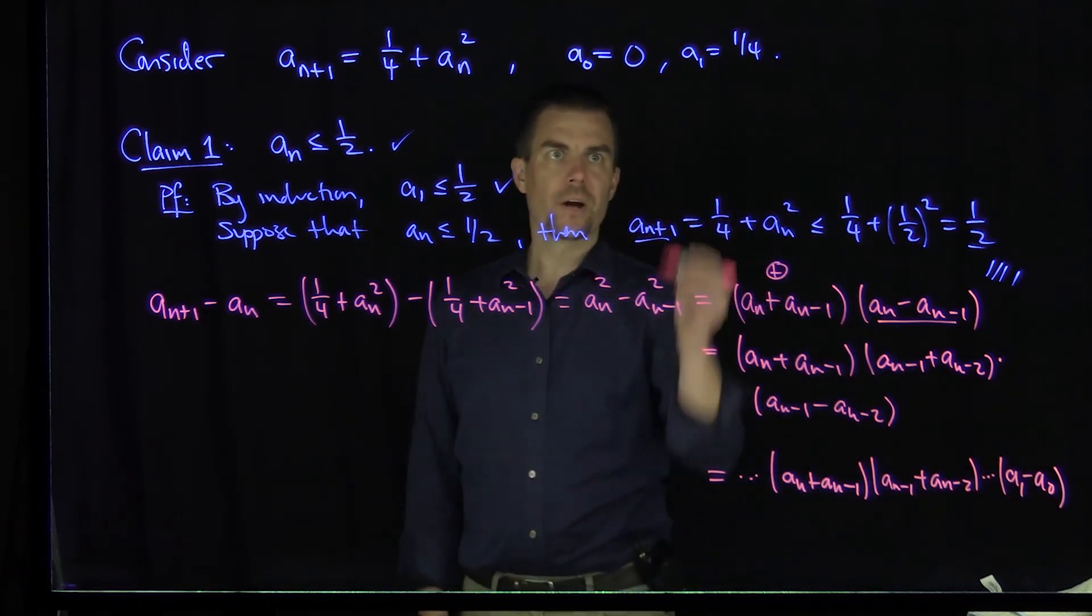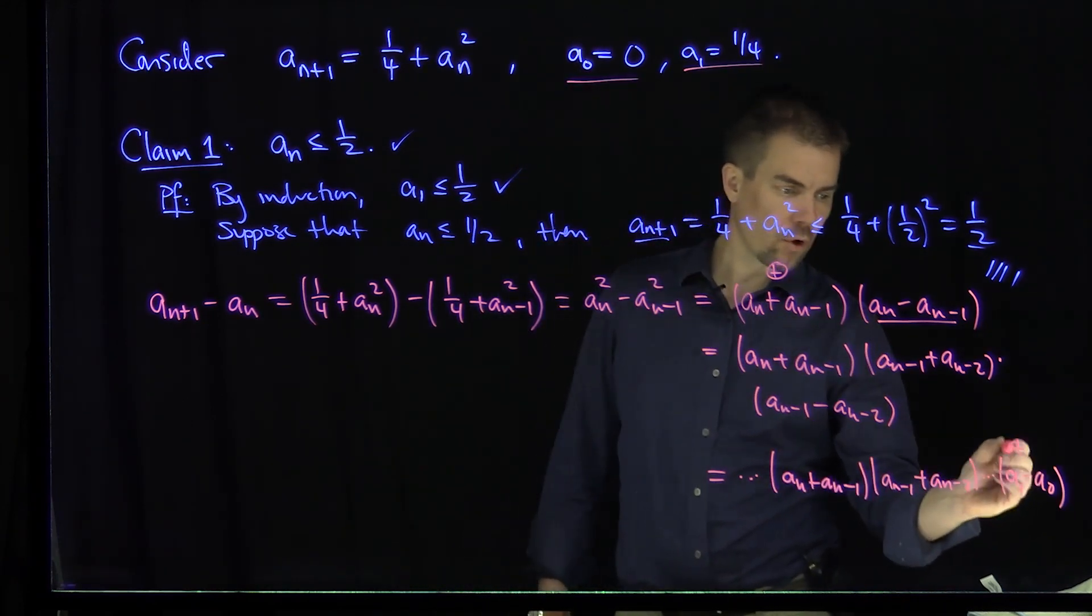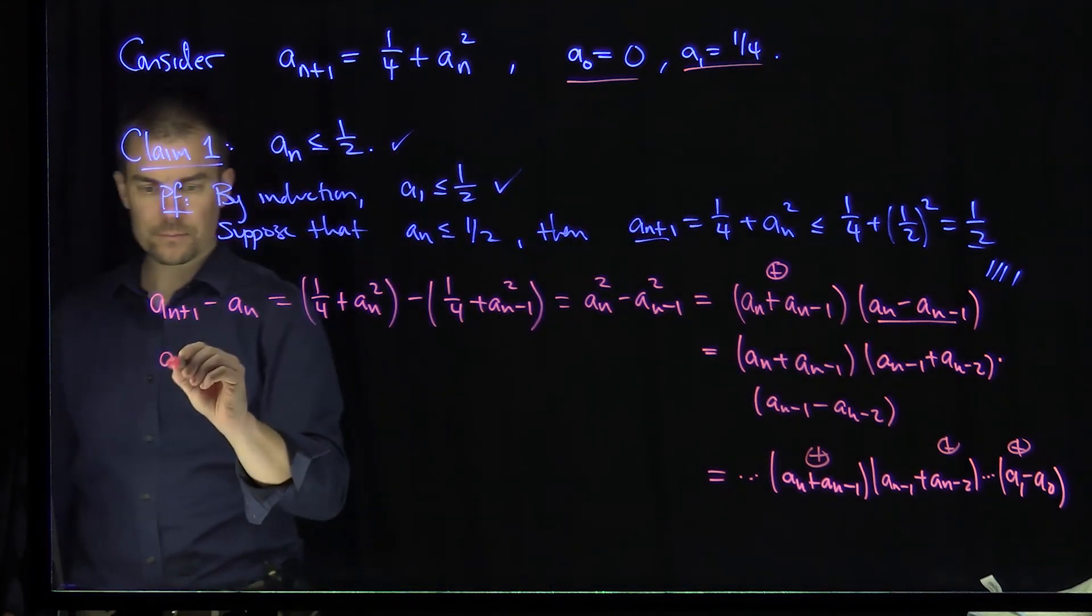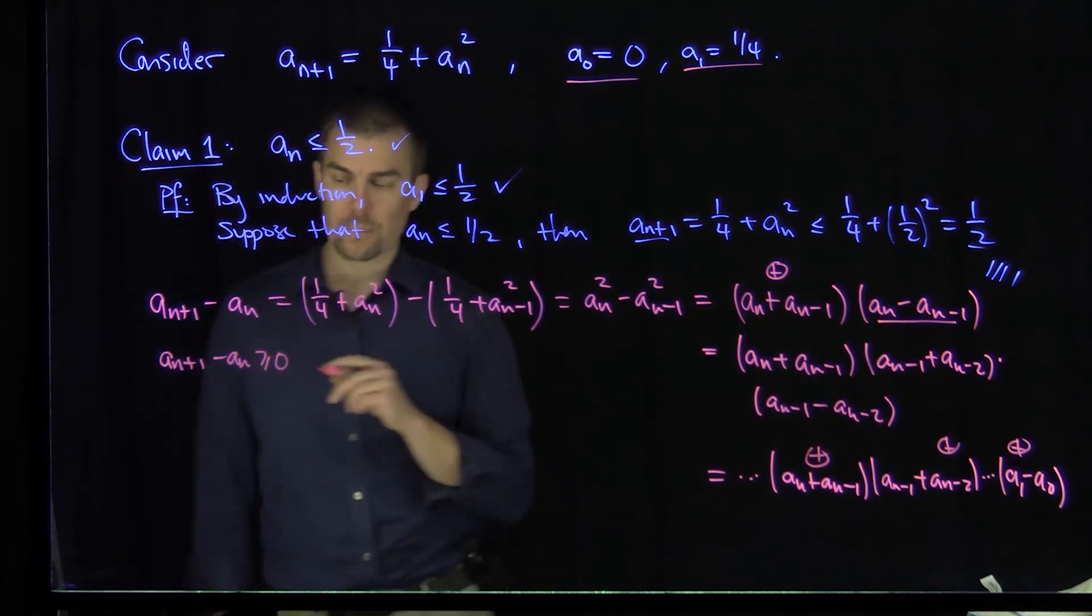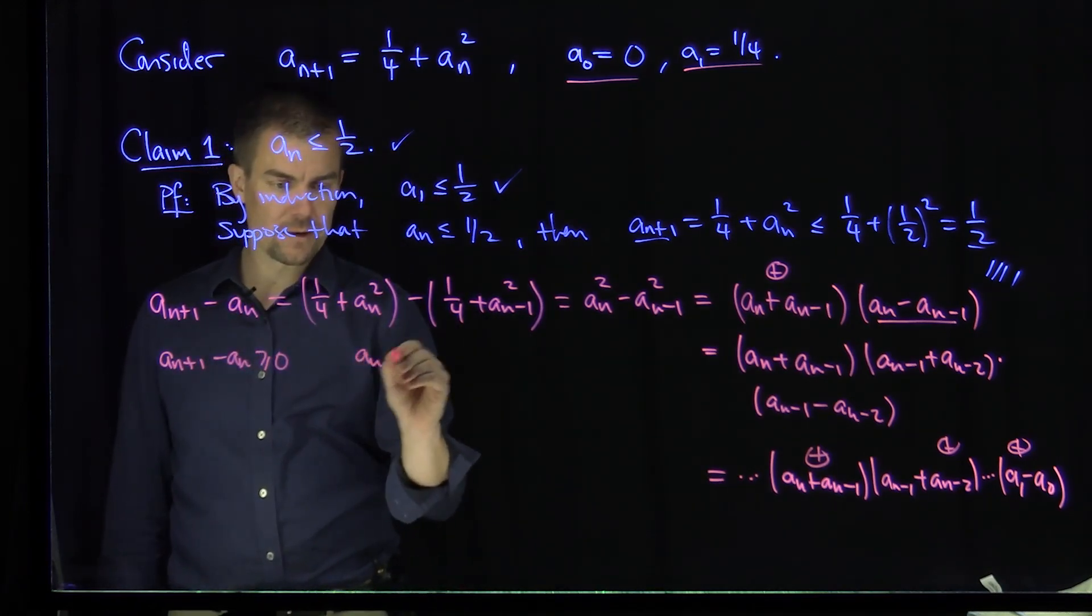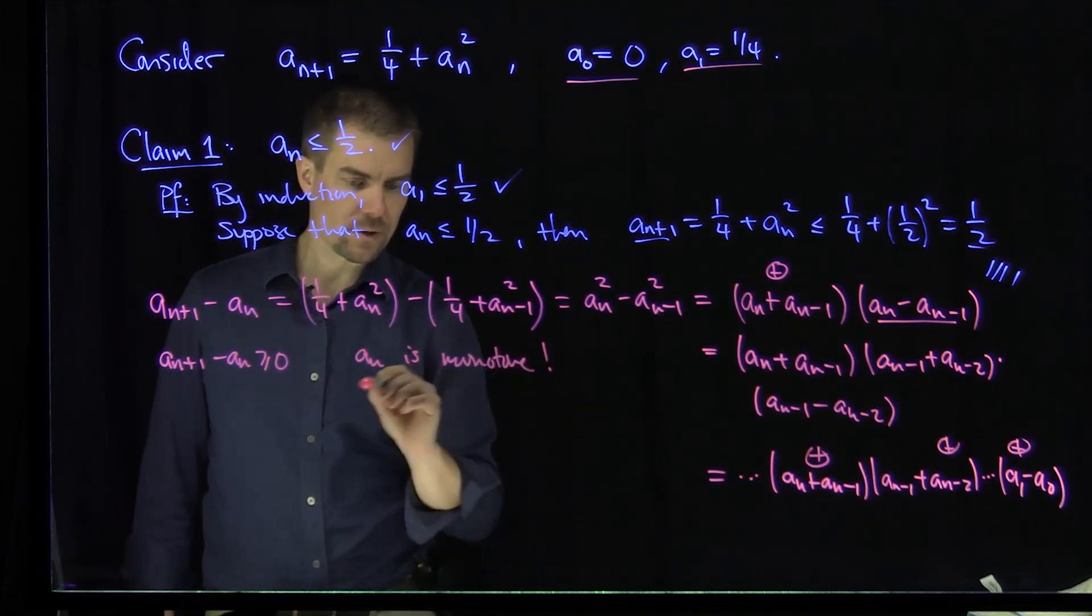But I know that a_1 - a_0 is positive, so I have the product of a whole bunch of positive terms over here. So what we conclude from this is that a_{n+1} - a_n is greater than or equal to 0. So in other words, this sequence over here is monotone increasing.